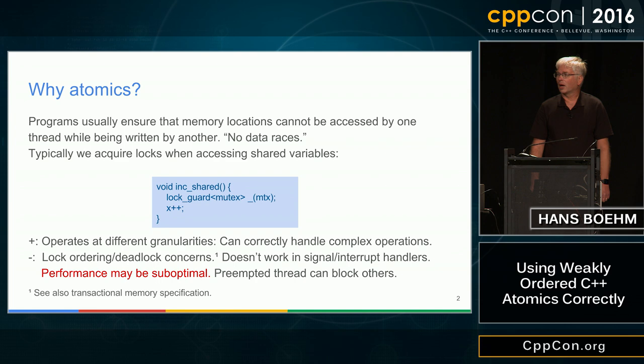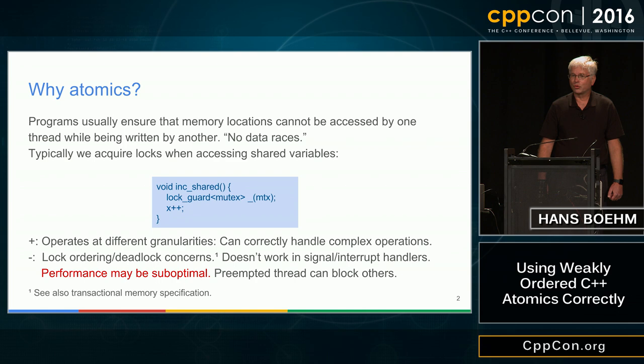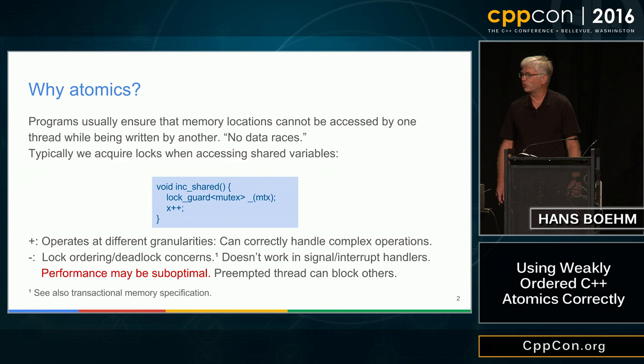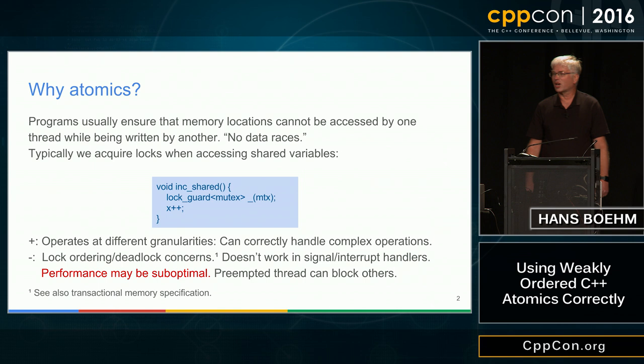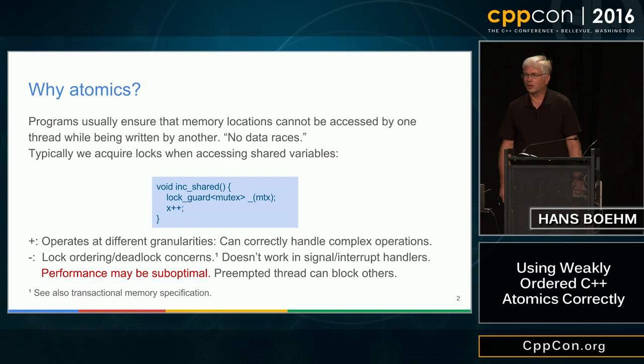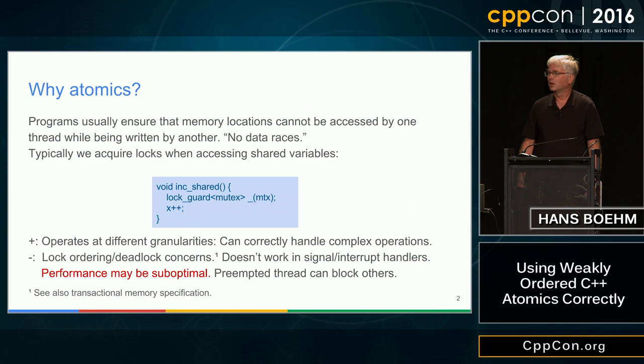The lock-based approach basically doesn't work if you're trying to provide mutual exclusion with a signal or interrupt handler, because you're likely to deadlock. If you get a signal or interrupt while already holding a lock, you can't acquire that lock again in the signal or interrupt handler. Another disadvantage is that if you care about predictable execution times, the OS scheduler may preempt a thread while it holds a mutex, preventing other threads from making progress. The big perceived disadvantage is that mutexes are thought to be slow.